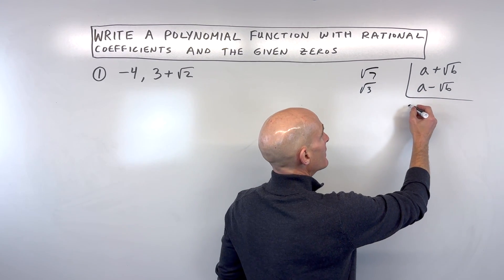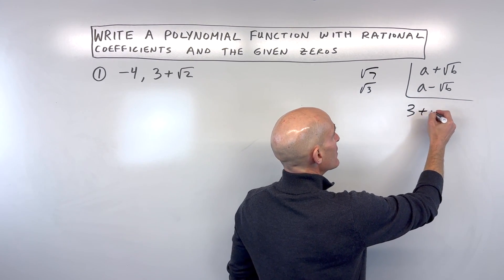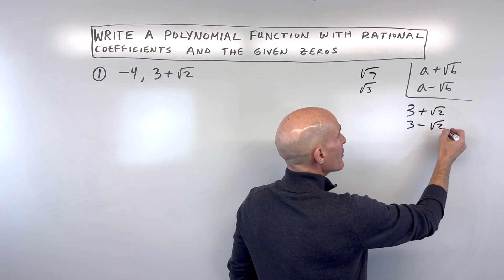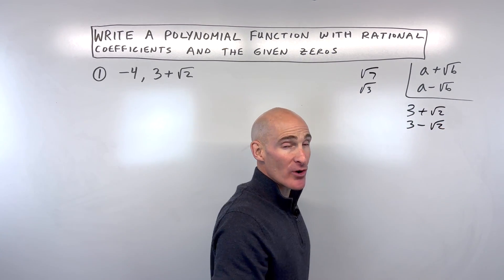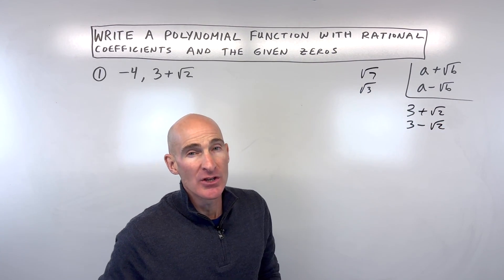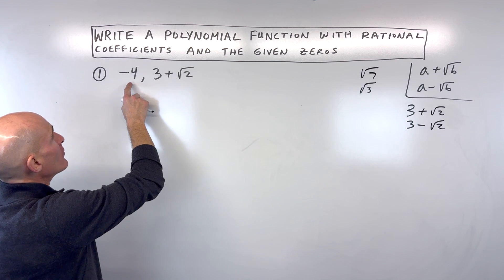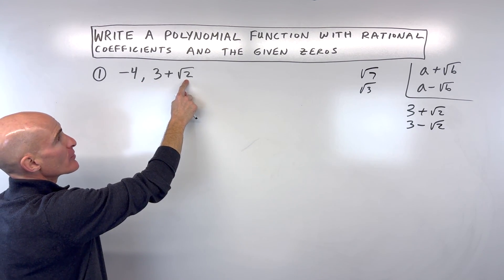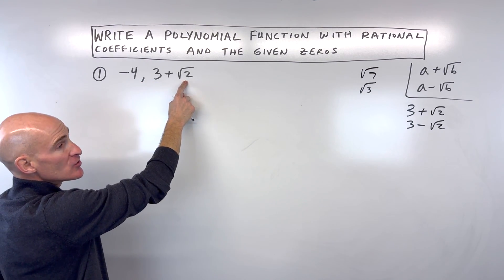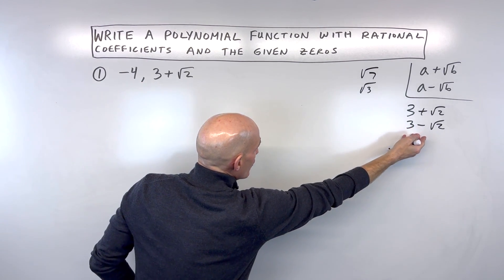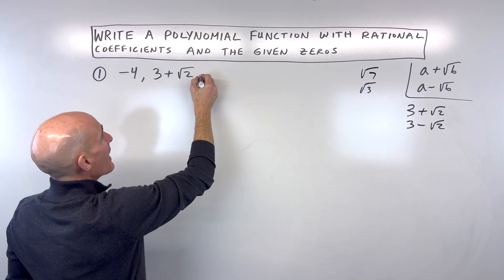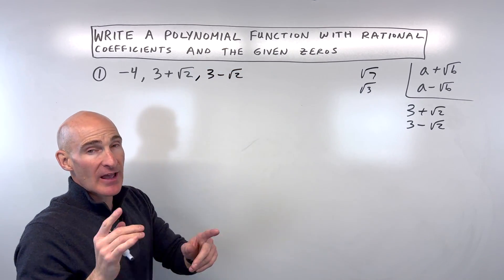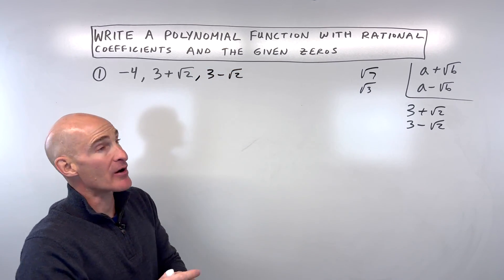For example, if I had three plus the square root of two as a zero, then I also have three minus square root of two. So for this first example, we've got negative four as a zero and three plus square root of two as a zero, which means three minus square root of two also has to be a zero. We have to have that conjugate pair.